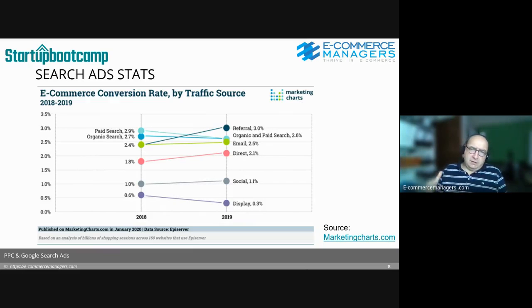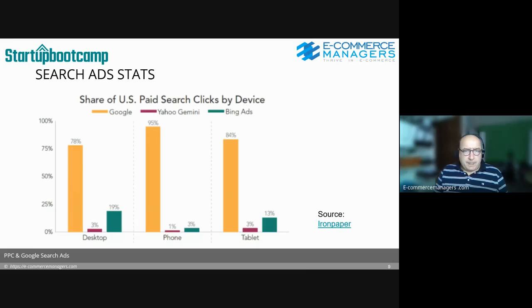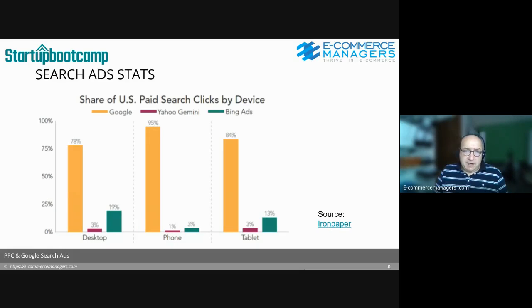On the cost side, it costs money, but you can manage the money — you don't have to spend thousands of euros or pounds to find out how it works. In the United States, Google has the smallest market share compared to other countries, but it's still enormous. In European countries, Google's share is even bigger. In the US, Google has 78% desktop market share, 84% on tablet, and 95% on mobile phones. The only other network to really consider is Bing from Microsoft.